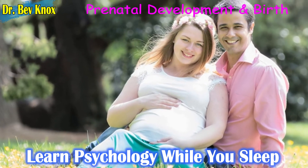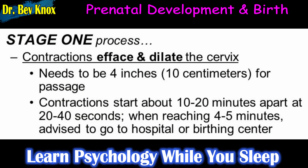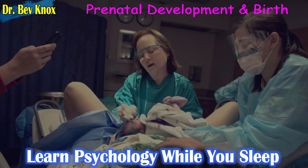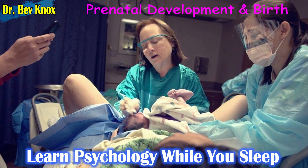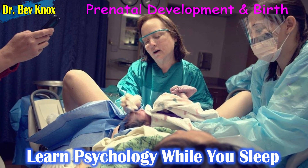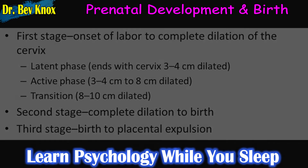Now let us review the birthing process. Childbirth occurs in three stages. The first stage, which lasts about 10 to 12 hours for a woman having her first child, is the longest — the cervix dilates to about 10 centimeters, or about 4 inches. The second stage begins when the baby's head starts to move through the cervix and ends with the baby's complete emergence.